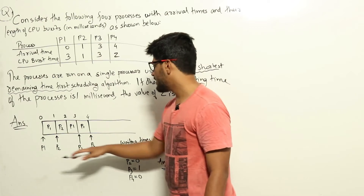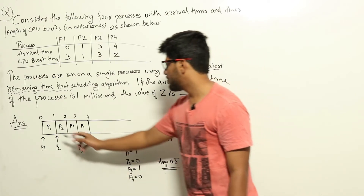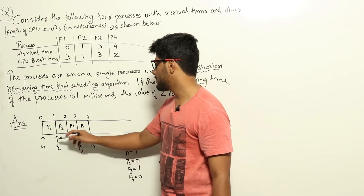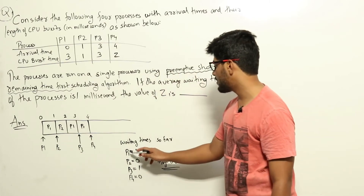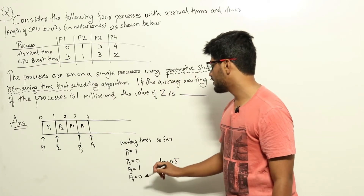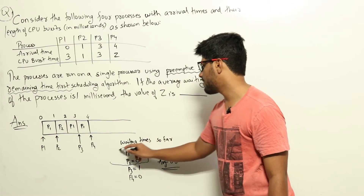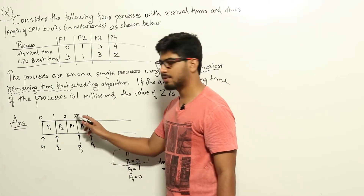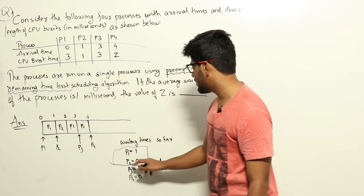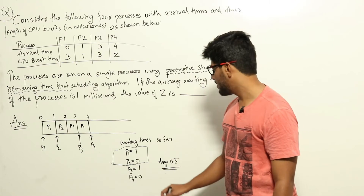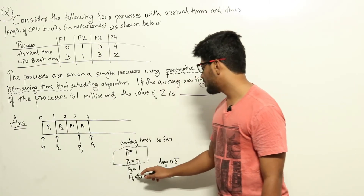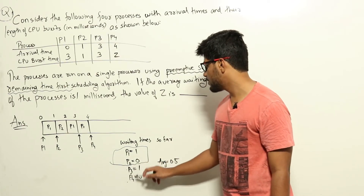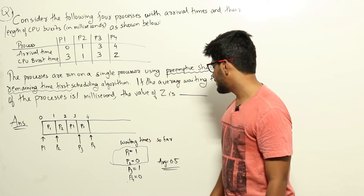Now let's calculate waiting times so far. P1 waited only 1 millisecond while P2 was running. P2 didn't wait at all since it started immediately upon arrival. So wait time of P1 equals 1, P2 equals 0, and these are fixed since both have finished. P3 arrived at time 3 but P1 ran from 3 to 4, so P3 has waited 1 millisecond so far. P4 just arrived at time 4, so P4 has waited 0 milliseconds so far.